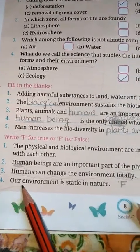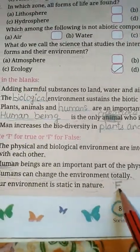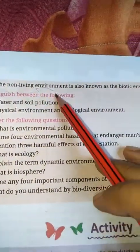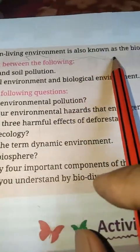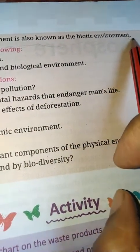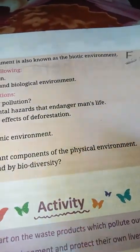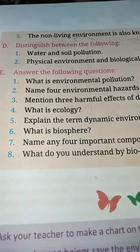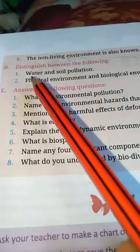Number four: our environment is static in nature — this is false. Number five: the non-living environment is also known as the biotic environment. No, the non-living environment is known as the abiotic environment. So this is also false.